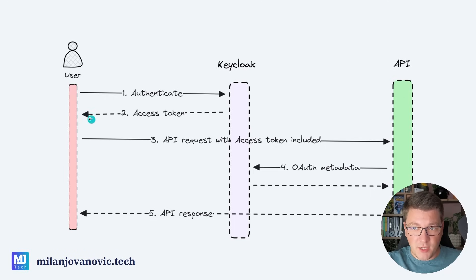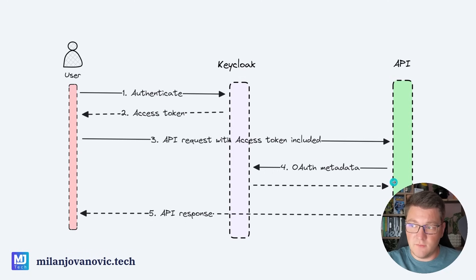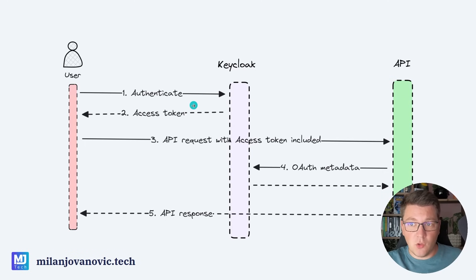Once your user has obtained a valid access token, they can use it to send an API request to the backend application. The backend API reaches out to KeyCloak to obtain metadata that allows it to validate the access token. KeyCloak gives the API the required data, and once the API validates the access token it can proceed to serve the request and return a response. We're going to focus on authenticating with KeyCloak and obtaining an access token, leaving backend integration for another video.